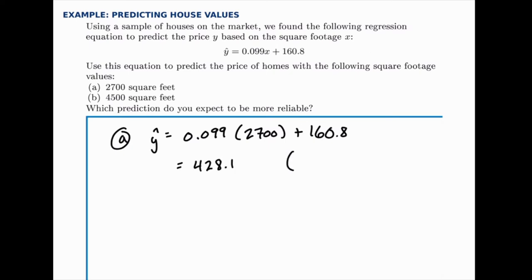So that corresponds to $428,100. And that technically means that the average house price we would expect for all the houses that are 2700 square feet would be $428,000 approximately.